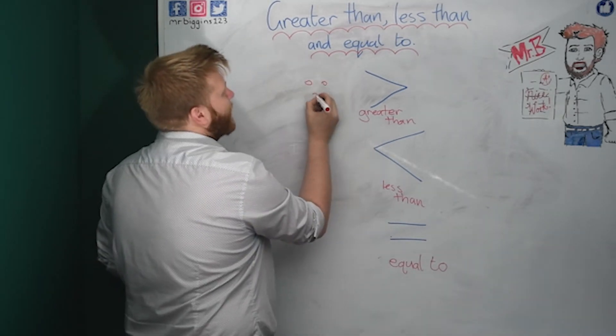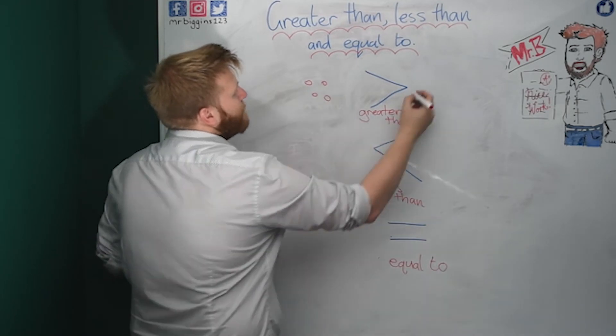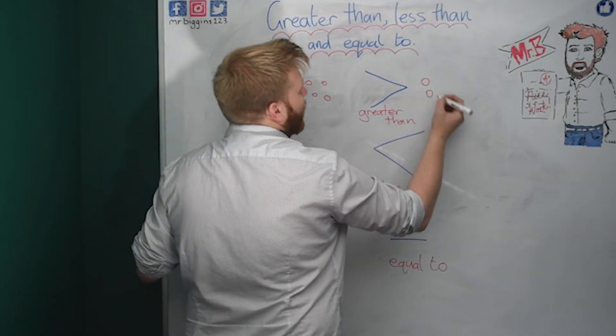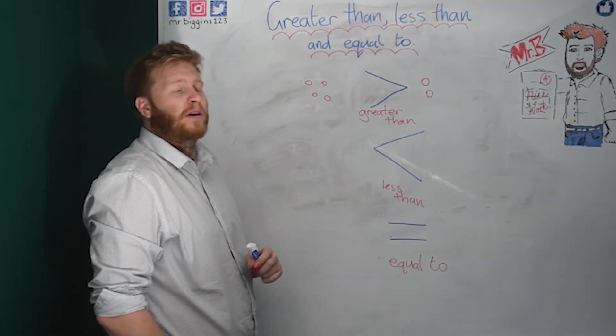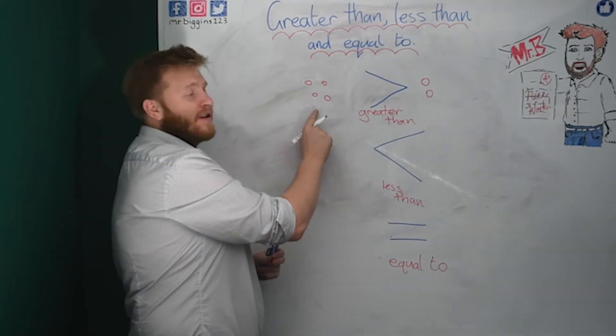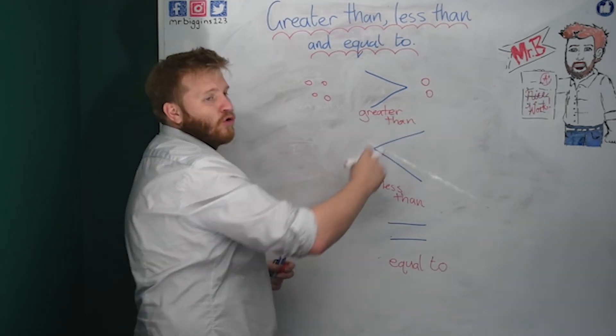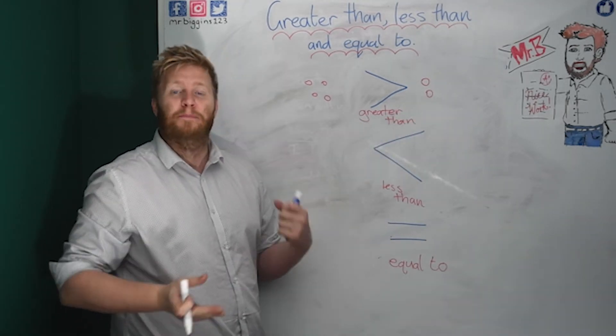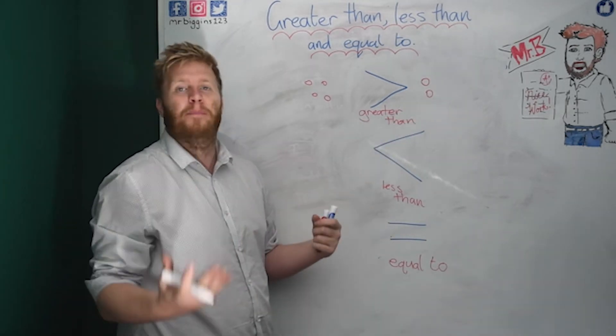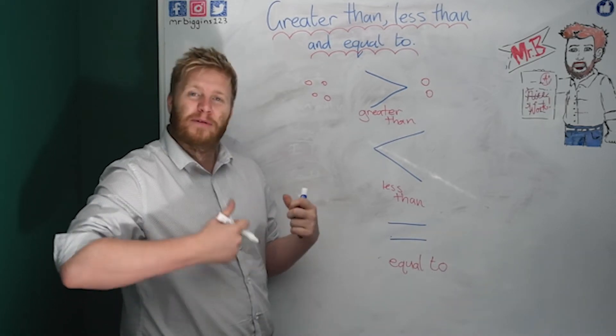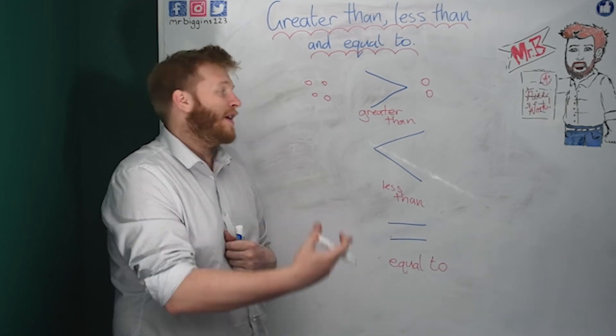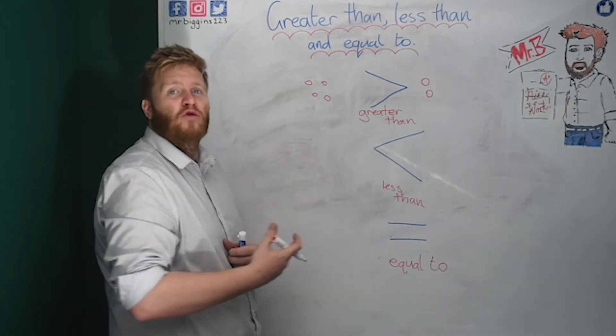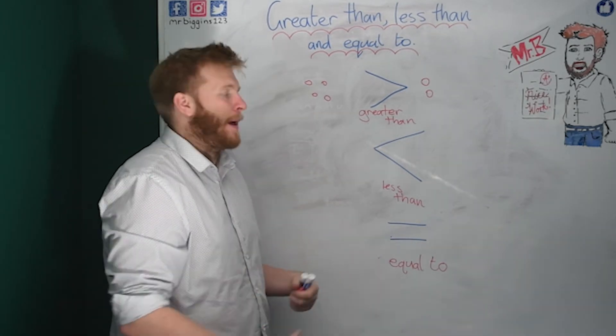What we're going to look at is what the word greater than means. Let's say I've got some counters. I've got four counters here and I've got two counters here. I am saying that this group is greater than that group. Greater is another word that means bigger. Greater means bigger. When we use it in maths and we say this number is greater than that number, or that group is greater than that group, we're saying it has more. It's bigger.